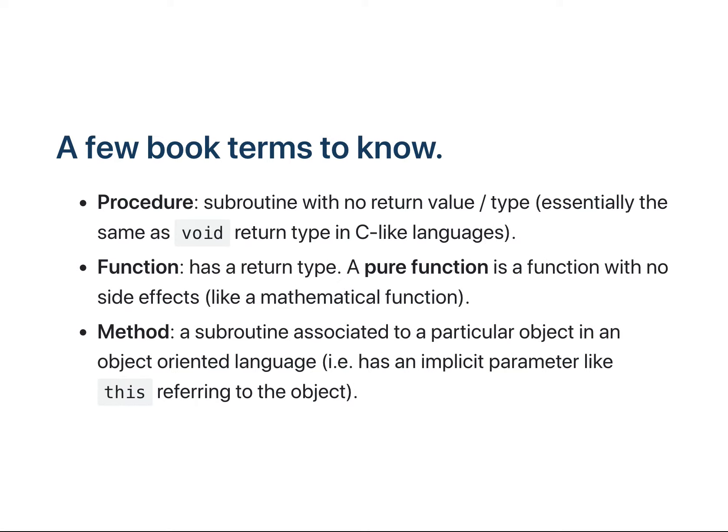There are a few book terms to know here. First, a procedure is a term used in some early languages for a subroutine with no return value — you can think of this like having a void return type in a C-like language. In some languages you would say either 'procedure foo' or 'function foo.' A function has a return value and type.